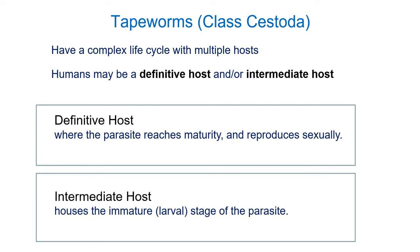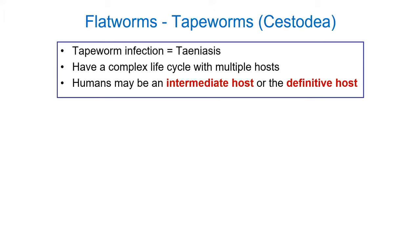Tapeworms are cestoidea. Members of this animal class have very complex life cycles and they're all parasitic. They can have multiple hosts, and humans can be a definitive host or an intermediate host for a tapeworm, depending on the species. The definitive host is where the parasite reaches maturity and reproduces sexually. The intermediate host contains the immature larval form. The tapeworms that cause humans problems belong to the genus Tinea, and if you have a tapeworm infection, you have teniasis.